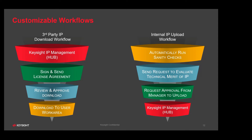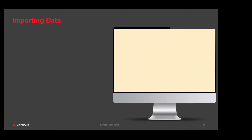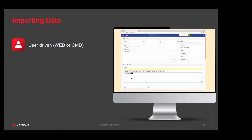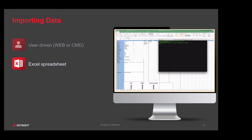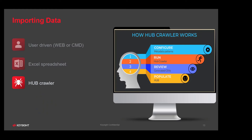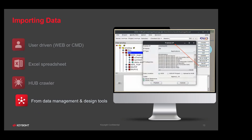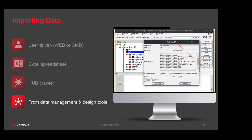Let's talk about how we import data into Hub. Being a catalog, importing data in various formats can be a challenge, but we've developed techniques to help. We have a user-driven format, either web-based or command line. We can also import via an Excel spreadsheet or comma-separated list. We've developed a web crawler that can literally crawl through your enterprise and retrieve data. Finally, we can import data from other management and design tools.